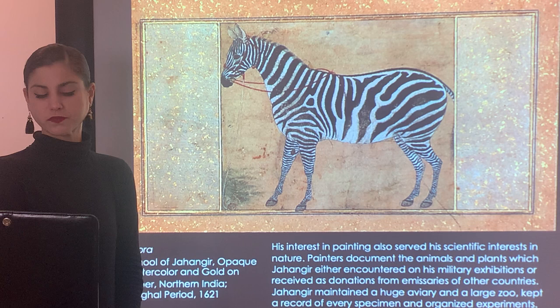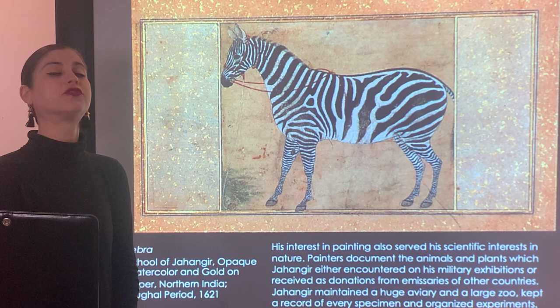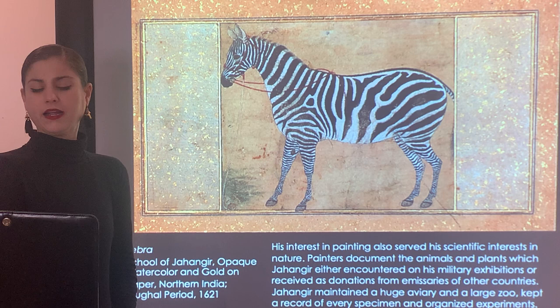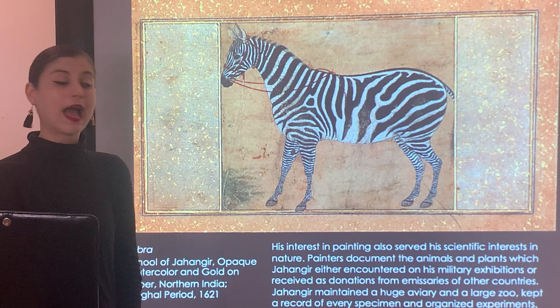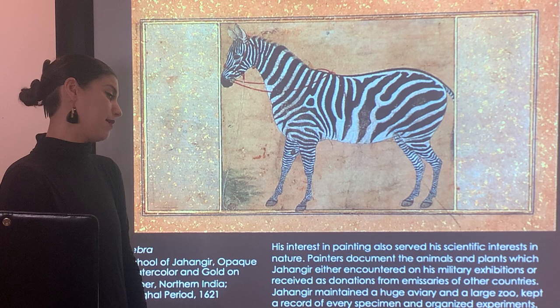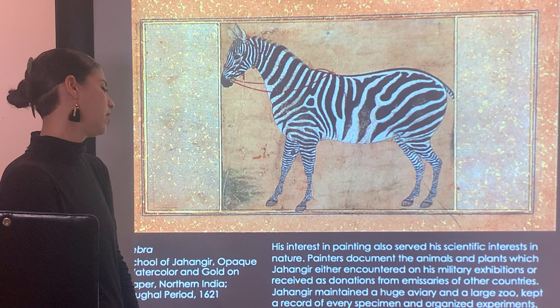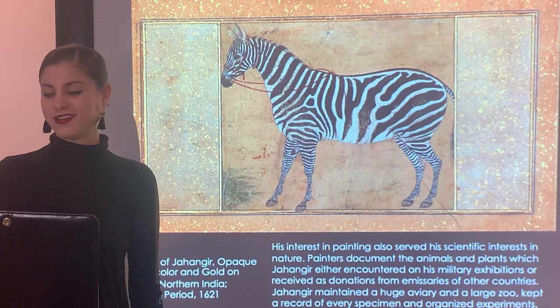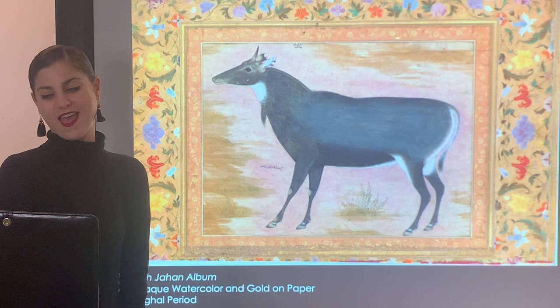Jahangir was really interested in science and the world around him — interested in mimicking nature and bringing observation and knowledge to the forefront at his court. We see him commissioning many scribes and scholars to document the natural world, animals, and botanical plants. Painters were documenting animals and plants encountered on military expeditions or received as donations from friends in other countries. Jahangir maintained a huge aviary with birds and also a large zoo, keeping a record of every specimen and organizing various experiments. Here we see zebras from Africa being studied in the Asian continent.